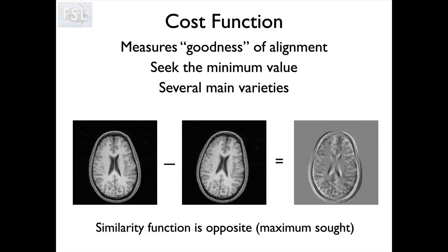With respect to cost functions, they are simply a way that the algorithm for registration knows how to quantify whether two images are aligned or not. Consider the two images at the bottom on the left hand side - you can see those two are not aligned. The human visual system is great, we can easily see that, but in order to run the registration algorithm we need a way of quantifying how much they are in alignment or how far out of alignment they are, and that's what the cost function does.